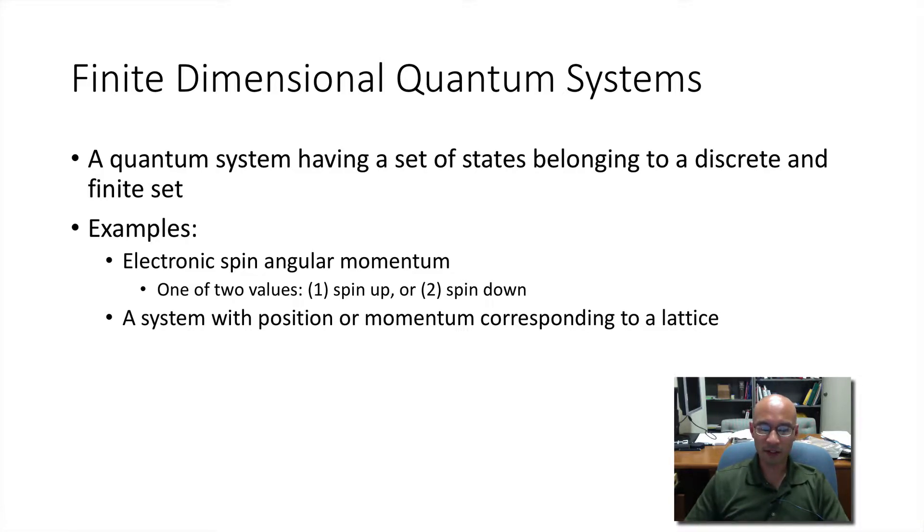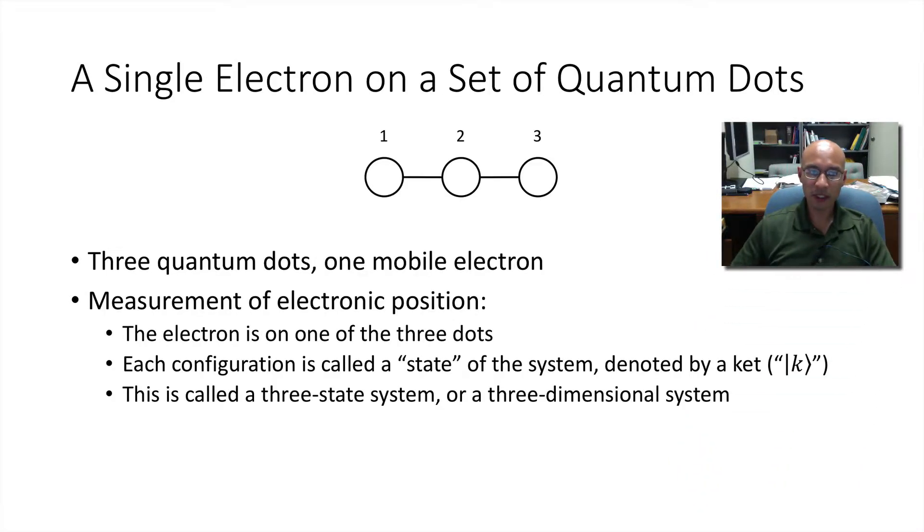Another which we'll consider is a system with position or momentum corresponding to a lattice. So consider three quantum dots with one mobile electron and we're going to take a measurement of that electron position. So the electron can be on one of those three quantum dots. A quantum dot is just a place, think of it as an electron trap.